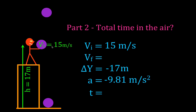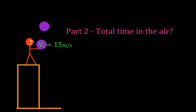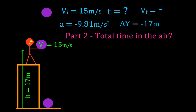The object starts at our reference point, which we designate as zero, and it ends up below at minus 17 meters — that is the change in position. We are trying to find the time. We are not given and will not find the final velocity in this part two problem. We have been given three variables and we're asked to find a fourth, so we can use our kinematic equations.